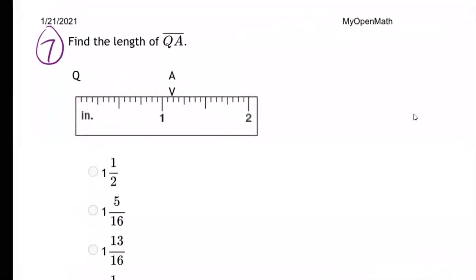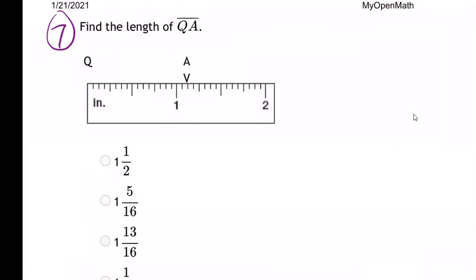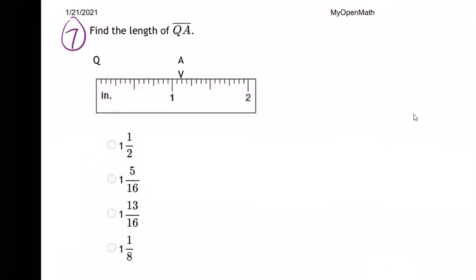Okay, so number seven here. We are wanting to just practice with a ruler, make sure you're good at reading ruler lengths. The question is find the length of QA. So Q starts here, goes all the way to here.